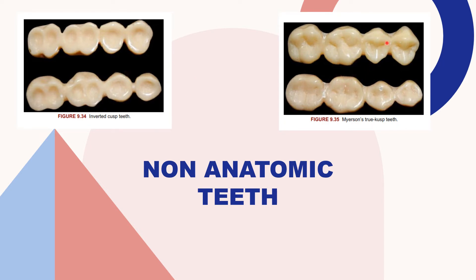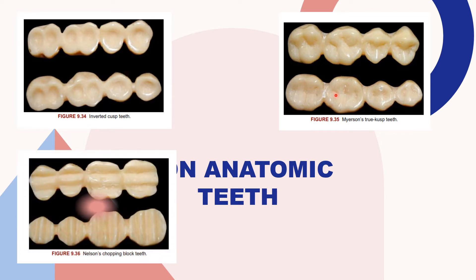These are Myerson's true cusp teeth, designed by Myerson. This is also a cuspless posterior that had a series of buccolingual ridges with sluiceways between them. These are Nelson's chopping block teeth, designed by Nelson. Here flat occlusive surfaces with ridges — mandibular ridges were placed transversely while maxillary ridges were mesiodistal — and the perpendicular contact made by the ridges was claimed to have an efficient shredding and cutting mechanism.